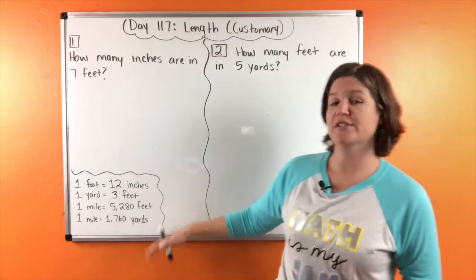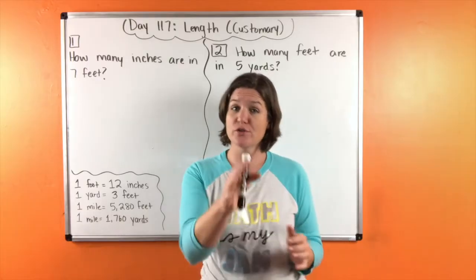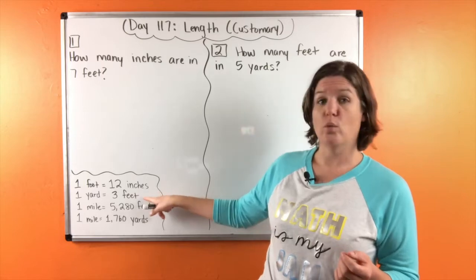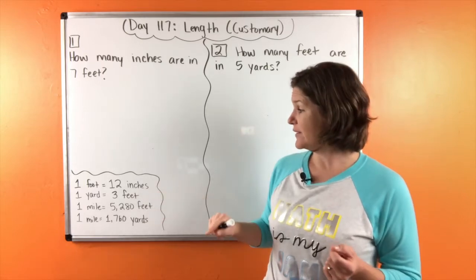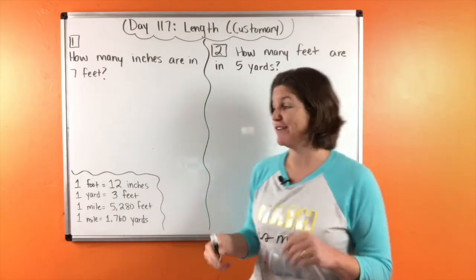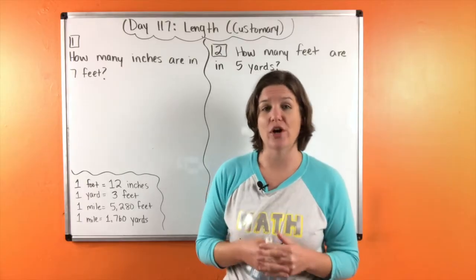So here are the references that we will need today, which should also be in your notes for growth section of your student copy. So we have that one foot equals 12 inches, one yard equals three feet, one mile equals 5,280 feet, and one mile also equals 1,760 yards.